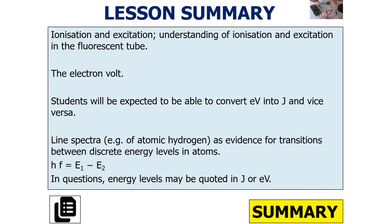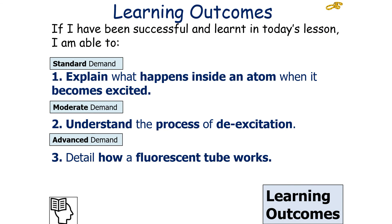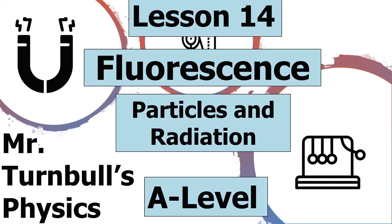If we've been successful in this lesson, we should understand what ionisation and excitation are, and understand the process of ionisation and excitation in the fluorescent tube. We should understand what the electron volt is and be able to convert between eV and joules. We should also be able to look at transitions between energy levels in atoms, explain what happens inside an atom when it becomes excited, understand de-excitation, and detail how a fluorescent tube works. I hope you've enjoyed today's lesson on fluorescence, part of the particles and radiation topic in AQA A-level physics. Thank you very much for listening and have a lovely day.